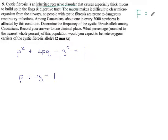So big F would be normal. CF is actually a recessive trait, so little f is the allele that causes cystic fibrosis and causes dangerous respiratory infections among Caucasians. About one in every 3,000 newborns is affected by this condition. So it's possible to be big F, big F, meaning you are fine.